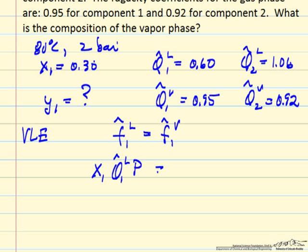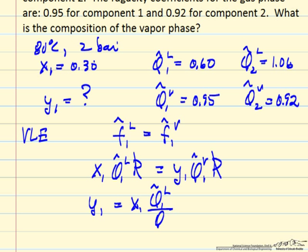In the vapor phase, we have mole fraction times fugacity coefficient times total pressure. This means y1 equals x1 times the fugacity coefficient in the liquid phase divided by the fugacity coefficient in the vapor phase.